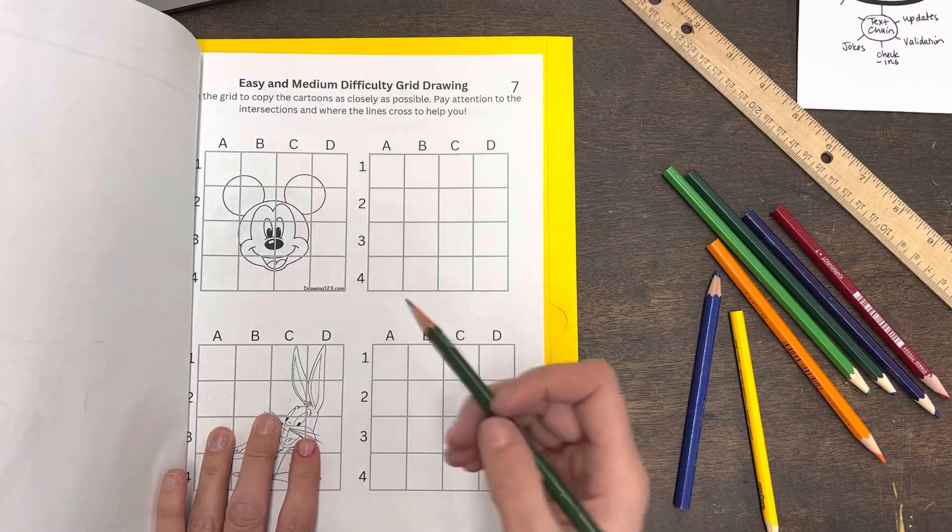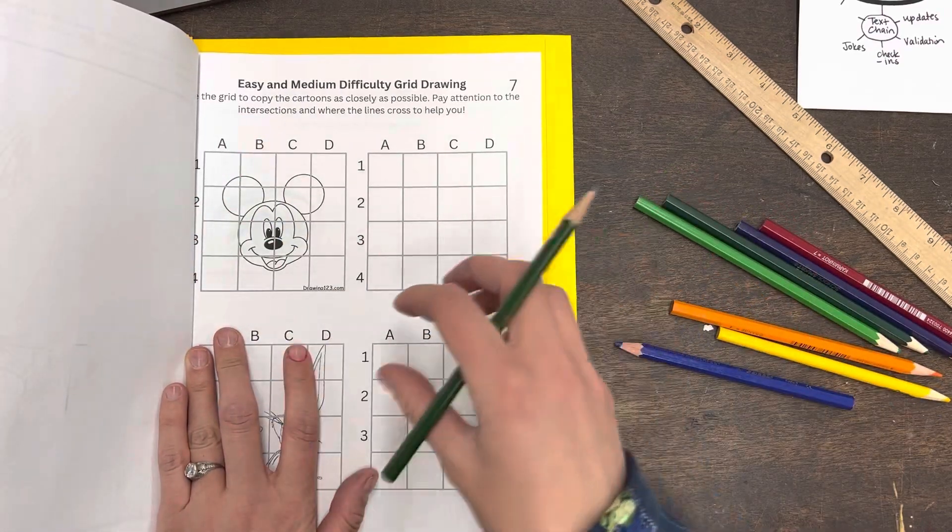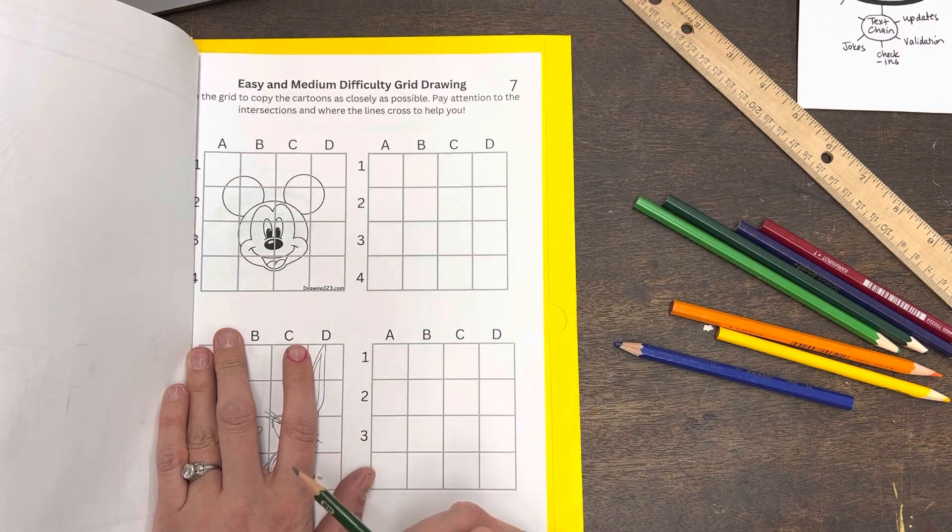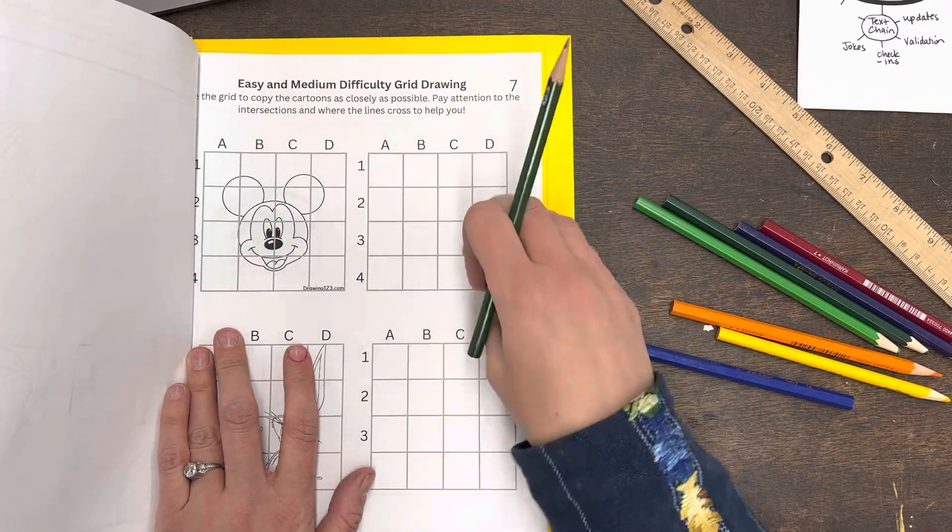So what you do with grid drawing, and this is a really great technique for trying to copy or transfer something, is you draw a grid over the image you're trying to copy and then you draw a grid on your final paper.